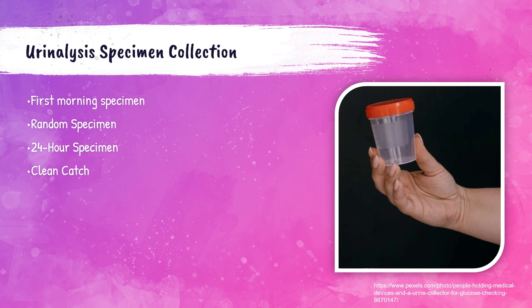Random specimens are urine samples taken at any point in the day. 24-hour urine samples are collected in large jugs, with the patient collecting urine over an entire 24-hour period. Clean catch collections require the patient to use a sterile wipe to clean the area before urination, then begin collecting the sample midstream. Clean catch collections are required when the physician suspects a bacterial urinary tract infection — this ensures no contaminant bacteria from the patient's skin are collected.